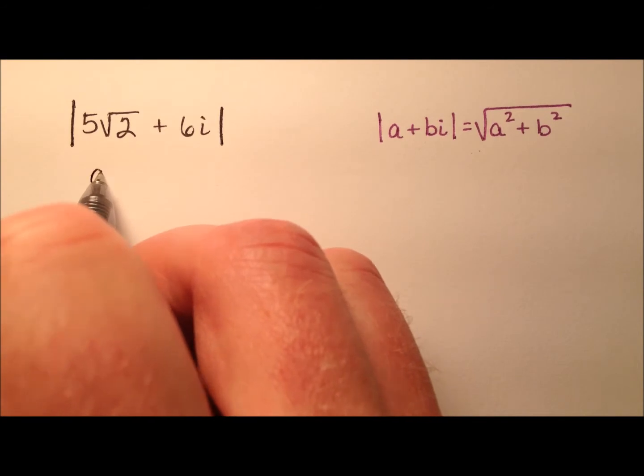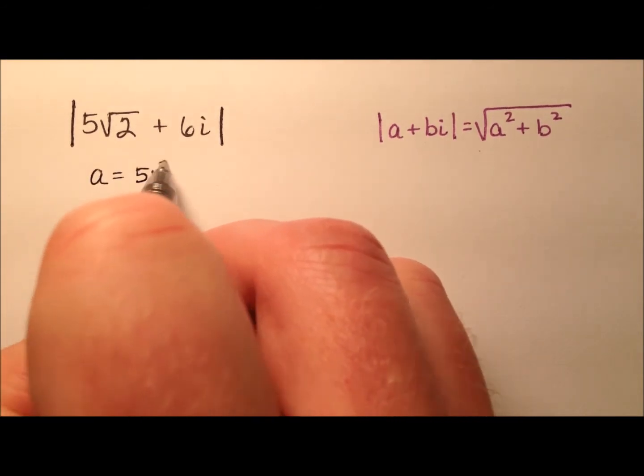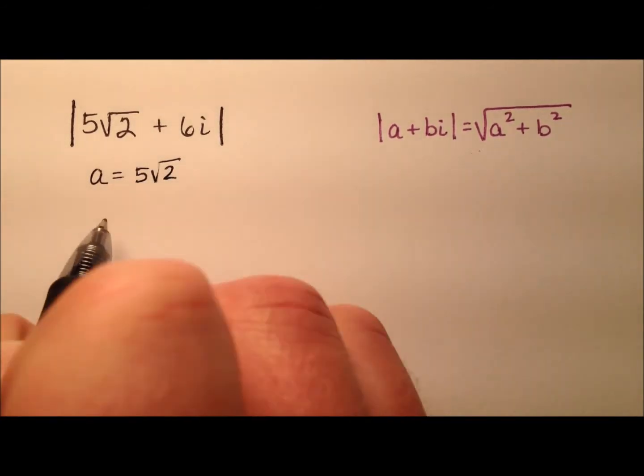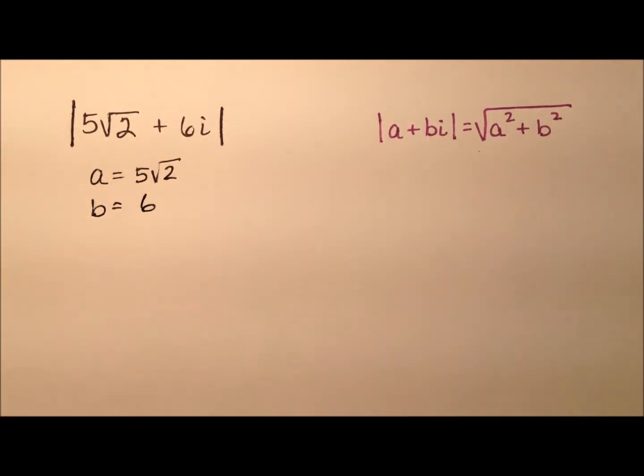Okay, so in our case, the a is going to be 5 times the square root of 2, and b is going to be 6.